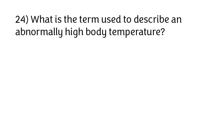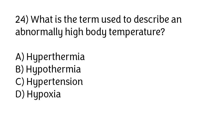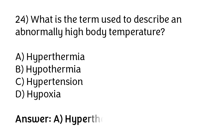What is the term used to describe an abnormally high body temperature? Options: hyperthermia, hypothermia, hypotension, hypoxia. The correct answer is option A — hyperthermia is the term used to describe an abnormally high body temperature.